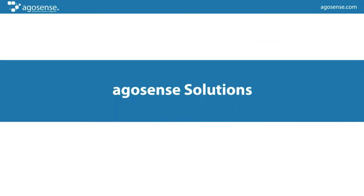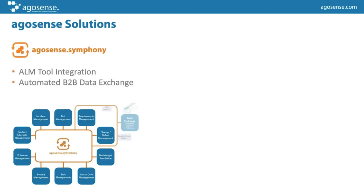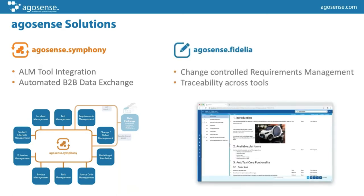We have two basic solutions. One is Symphony, which can be used for ALM tool integration and also for automated B2B data exchange, which is what we are looking at today. Our second product, as mentioned, is Argusons Fidelia — a platform for requirements management, very change-oriented, and also suitable for traceability across tools.